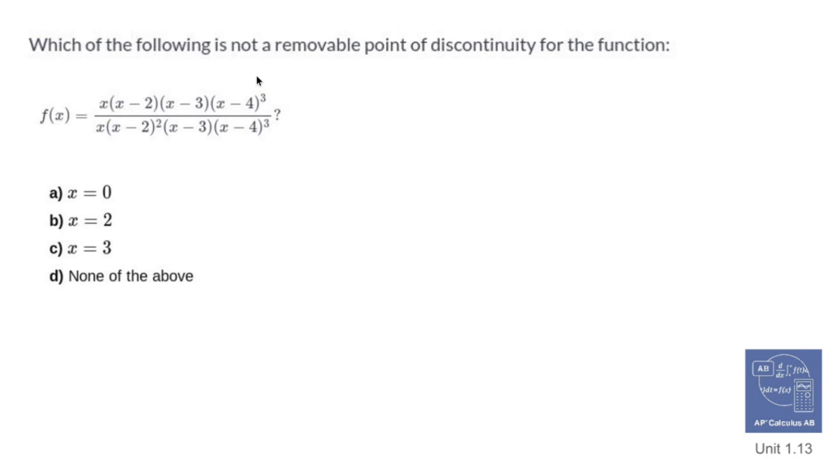Which of the following is not a removable point of discontinuity? So we have this function right here. A removable point of discontinuity is a fancy word for a hole. Now, holes exist if you have a factor in the numerator that's exactly the same as a factor in the denominator. Not only that, but the multiplicity in the numerator has to be the same as the multiplicity in the denominator.